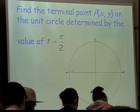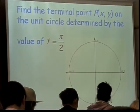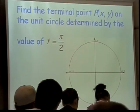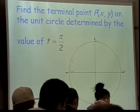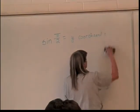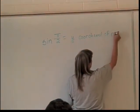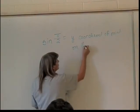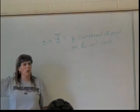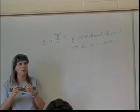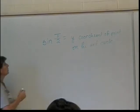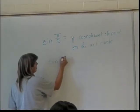If we want to define the sine of pi over 2, that is going to be the y coordinate of the point on the unit circle where the angle runs in the unit circle. So what will be the sine of pi over 2 if we define it as the y coordinate of the point on the unit circle where the angle runs in the unit circle? 1. So the sine of pi over 2 is equal to 1.